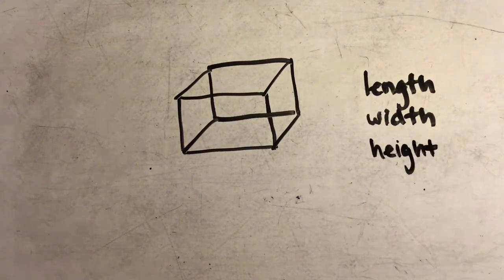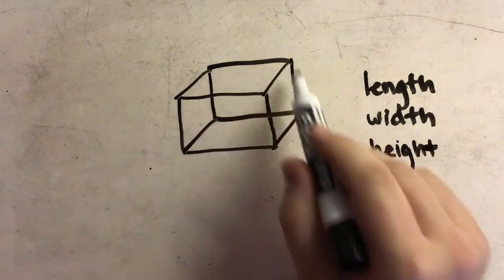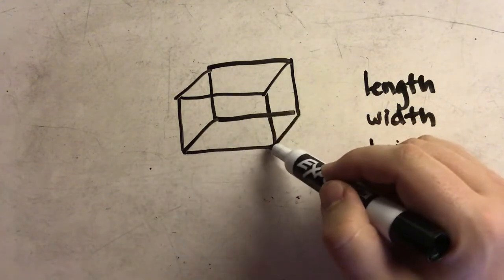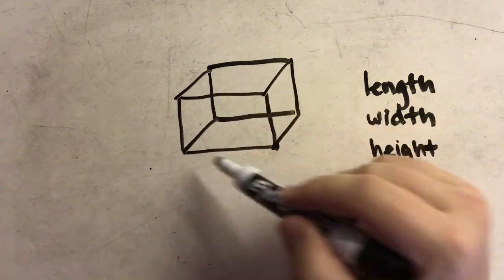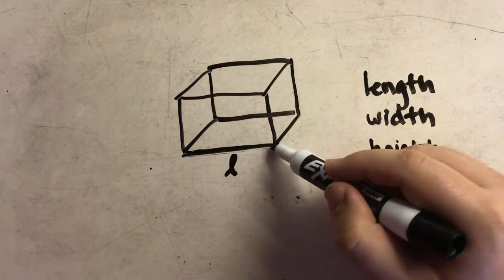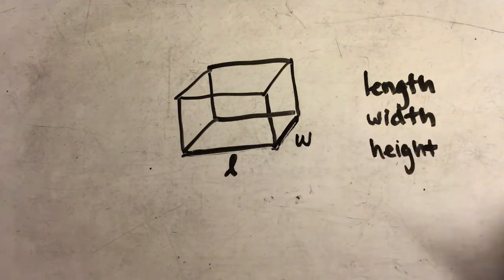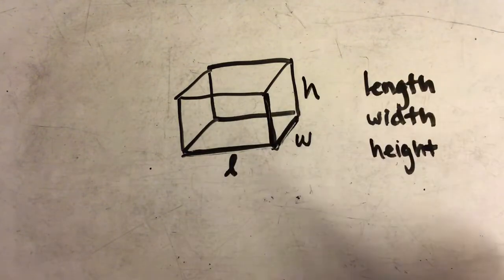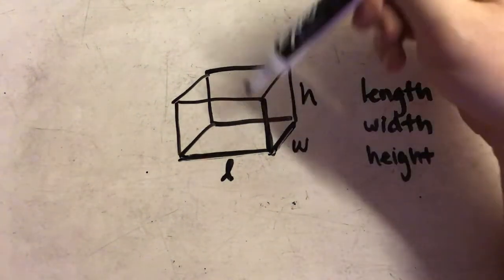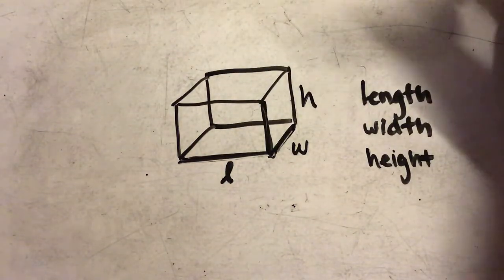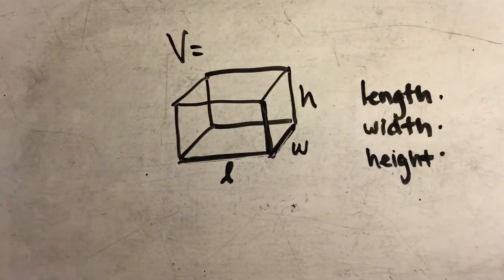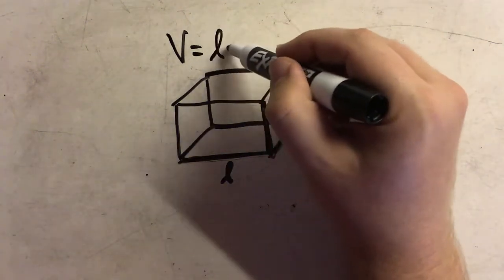A third measurement is added: height. I can find these three measurements by looking at any point where lines meet on this rectangular prism. At any point, three lines extend: one going this way is the length, one going backwards is the width, and one going up is the height — how tall the object is. To calculate volume, the formula is simply multiplying all three measurements together: volume equals length times width times height.